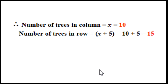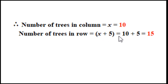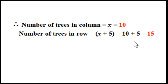Therefore x equals 10. Hence number of trees in column equals 10, and number of trees in row equals x plus 5 equals 10 plus 5 equals 15. So the number of trees in column is 10 and in row is 15.